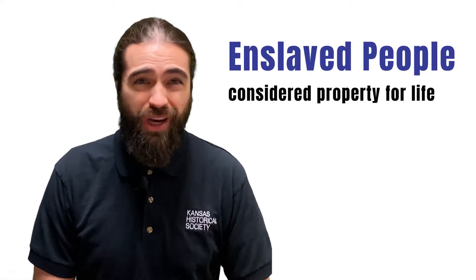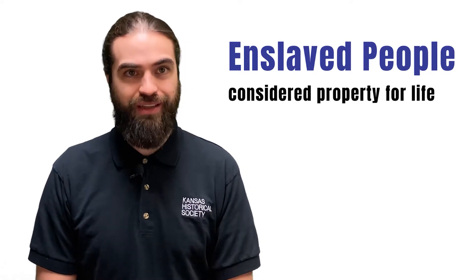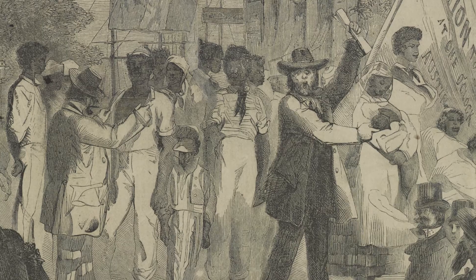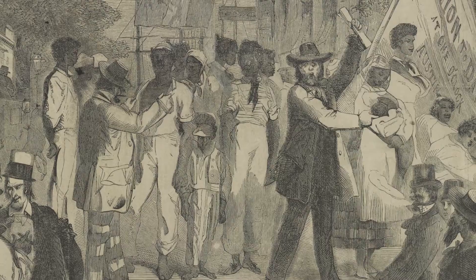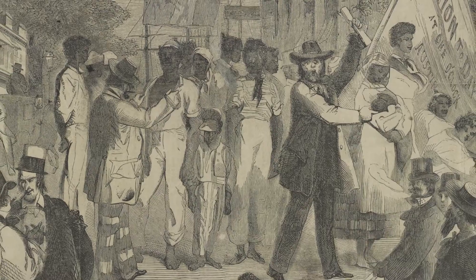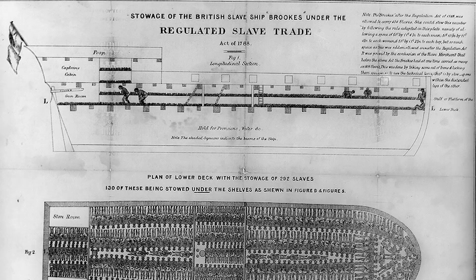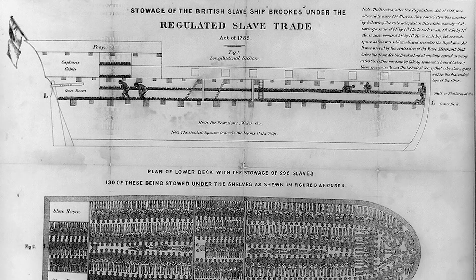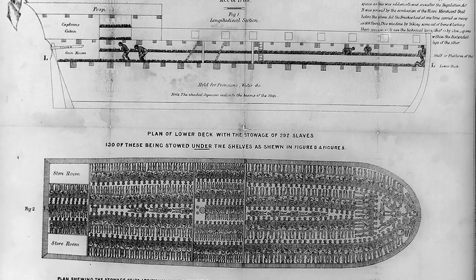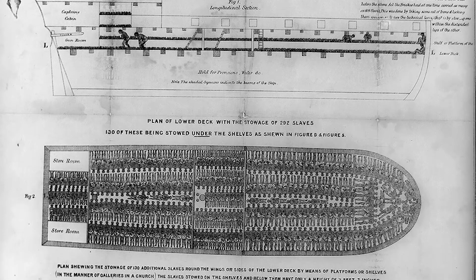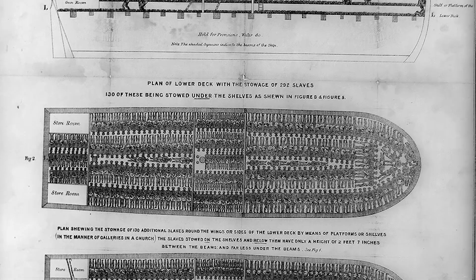Enslaved people had no contract, worked for life, and were not allowed to leave. Planters and merchants depended on this system, and as the economy grew, the need for cheap forced labor expanded as well. Enslaved Africans were taken from their homelands and shipped across the Atlantic Ocean by slave traders in a horrific journey called the Middle Passage.